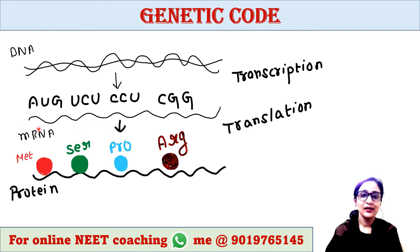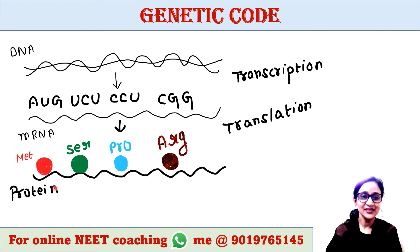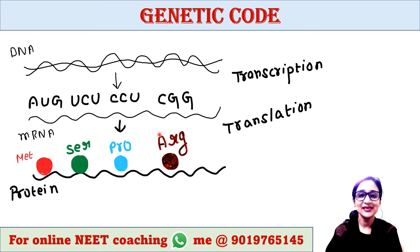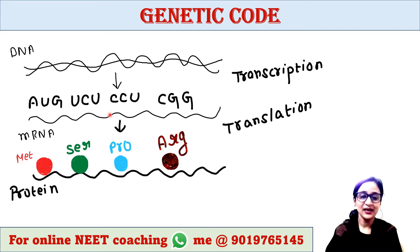This mRNA produces protein via translation. Protein is made up of amino acids. So where do these amino acids come from? mRNA is located in the cytoplasm and these amino acids are also available in the cytoplasm.